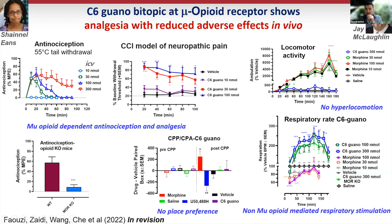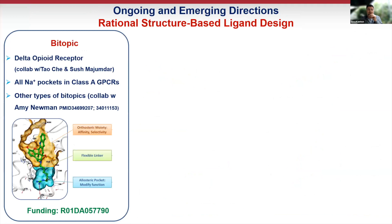For opioids, respiratory depression is the reason why about 100,000 mostly young people die in this country every year. This compound didn't have any respiratory depression — in fact it had some respiratory stimulation, which was not mediated by mu-opioid receptors. So it's an interesting side effect, maybe useful for other purposes. We have a lot of collaborations with chemists and biochemists and in vivo biologists on design of bitopic ligands.